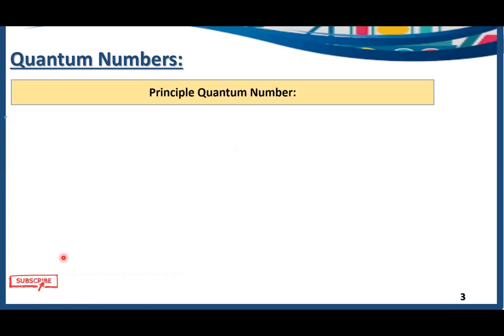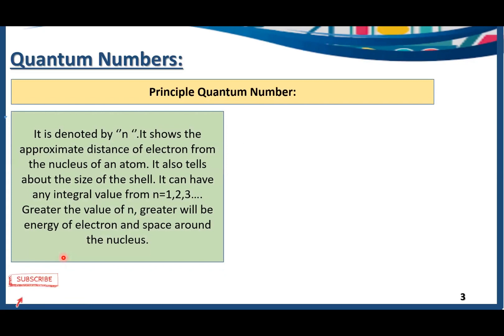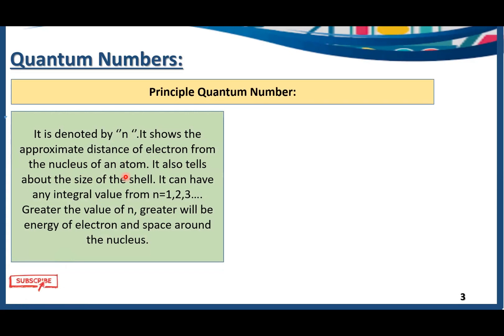The first quantum number is named the principal quantum number. Principal quantum number is denoted by small n, and it shows the approximate distance of electrons from the nucleus of an atom. In other words, it gives us information about the energy levels or shells. It also tells about the size of the shell.